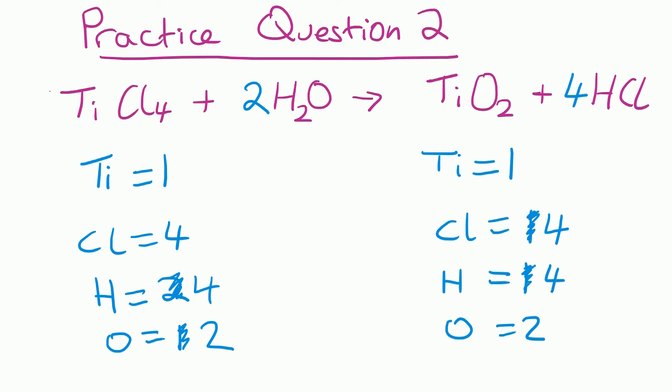Let's do a final check: one Ti on each side, four Cls on each side, four Hs on each side, and two Os on each side. That one is now balanced.